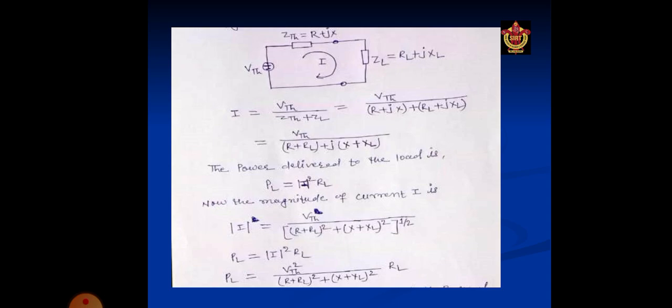First of all, we calculate current I. The I equal to total voltage VTH upon total impedance ZTH plus ZL equal to VTH upon ZTH equal to R plus j of X and ZL equal to RL plus j of XL. Now real part are separate and imaginary part are also separated. Then VTH upon R plus RL plus j of X plus XL.